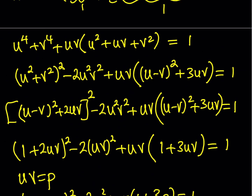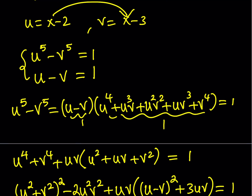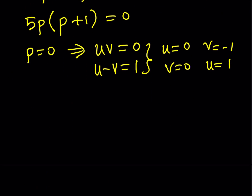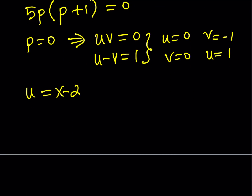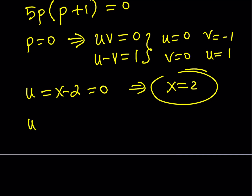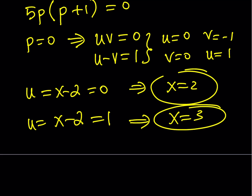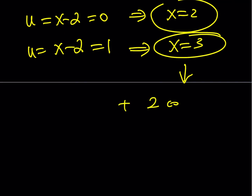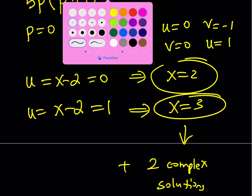Going back to our naming convention, u equals x minus 2. Since u equals x minus 2, if u equals 0, we get x equals 2 — one solution. If u equals 1, then x minus 2 equals 1, giving x equals 3. Now, this is a quartic equation, so if you divide the quartic by x minus 2 times x minus 3, you get a quadratic whose two solutions are complex. This means the only real solutions are x equals 2 and x equals 3. And this concludes our video.